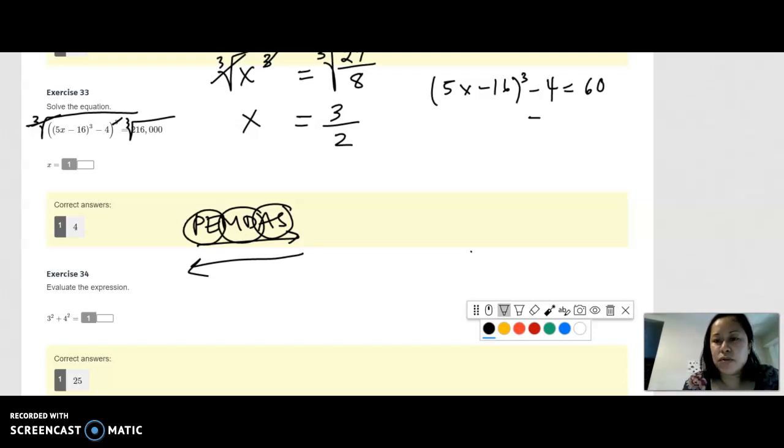Here we're going to go ahead and add 4 because we want to undo the addition subtraction first. And then you have 5x minus 16 cubed, this whole quantity cubed. That parentheses should stay there still. Equals 64.